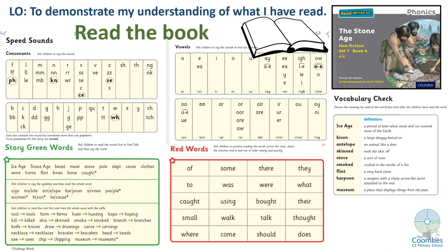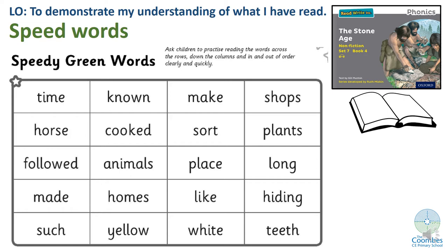Before we move on to the main task you need to make sure that the book is fresh in your head. Pause the video and read the book including your speed sounds, your green words, your red words and your vocabulary words. With your speedy green words you can practise with an adult and see if you can beat them, or read them by yourself and set yourself a challenge of how quickly you can read them. Pause the video and practise your speedy green words.